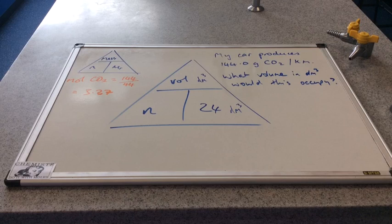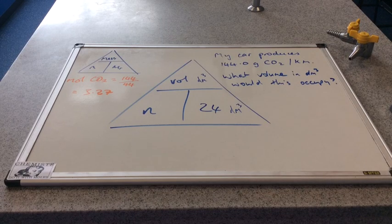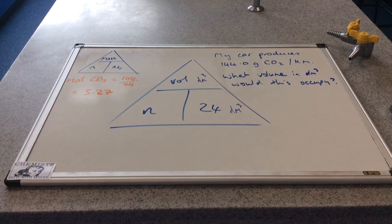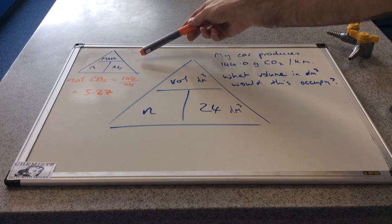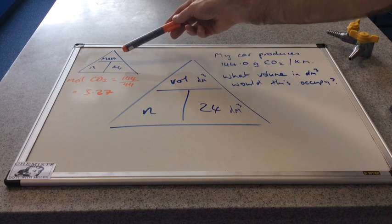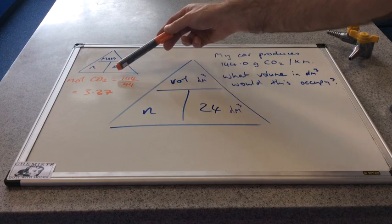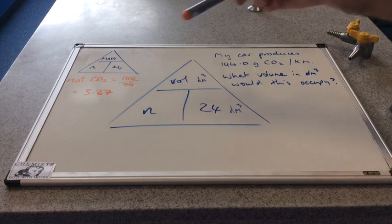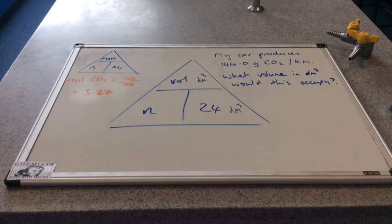So the first thing that we need to do is we need to calculate how many moles of carbon dioxide that 144 grams equates to. And to do this, we need the mass triangle. So it's the mass 144 divided by the MR of 44 for CO2, and that gives us a number of moles of 3.27 to three significant figures.